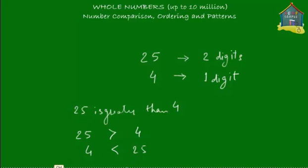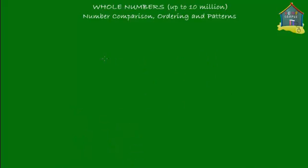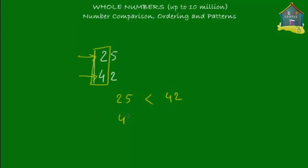But what if we had two numbers with an equal number of digits? Say we had 25 and 42. The top number has two digits and the bottom number also has two digits. How do you do comparison now? In that case, you start from the digits on the left. You take the two digits on the left and check which is bigger or smaller. Two is smaller than four, so your number 25 becomes smaller than 42. You could also write 42 is greater than 25. That's how you do comparison.